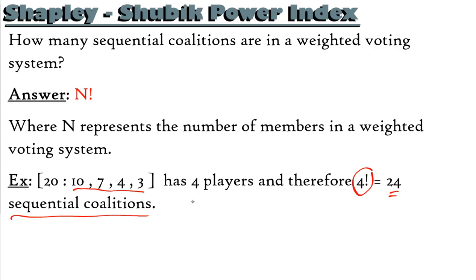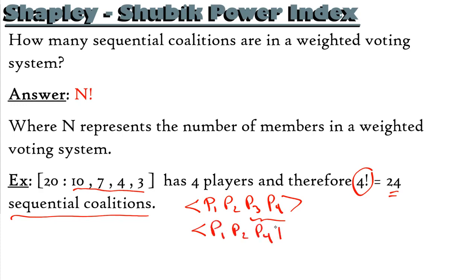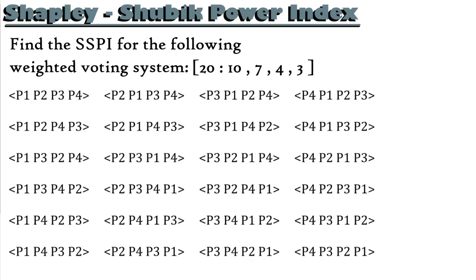To make this list, the first sequential coalition would be player 1, player 2, player 3, player 4 — joining in that order. Then we take the last two and switch their order: player 1, player 2, player 4, player 3. We keep going until we've listed all different orders. I'll provide a template so you don't have to generate all 24 coalitions yourself — you just need to find the pivotal player in each one.